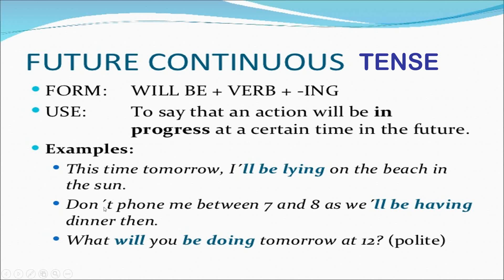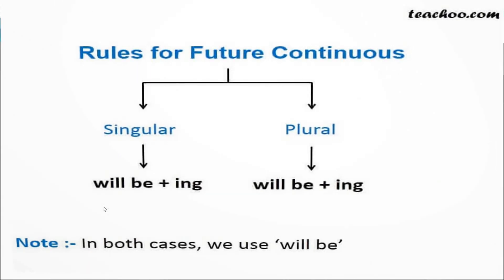Next example: 'Don't phone me between seven and eight' — why? Because 'we will be having dinner then.' And the last one is an interrogative sentence: 'What will you be doing tomorrow at 12 PM?' Very politely a person is asking what you will be doing at that time. Let's see the rules.